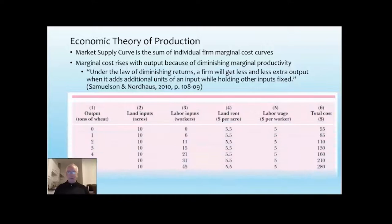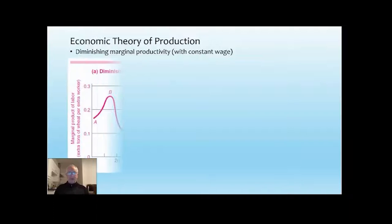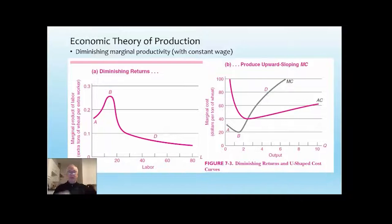You have a linear increase in the number of units, a steeply rising number of labour units needed to produce those units of output of wheat, and therefore total cost rises sharply as you add more workers. Samuelson and Nordhaus show rising and then falling marginal productivity. You invert the curve — flipping the axes of the graph — and that gives you a rising marginal cost curve.